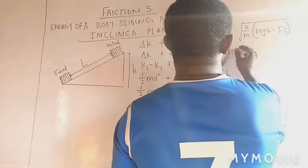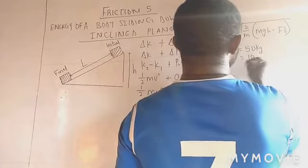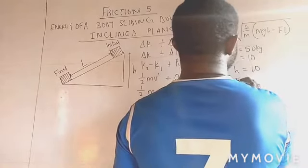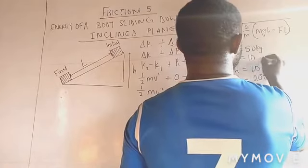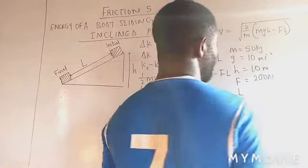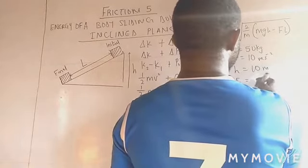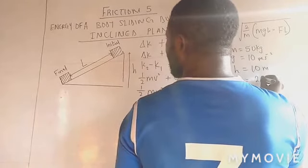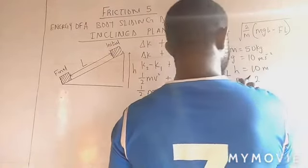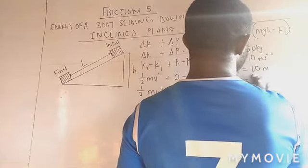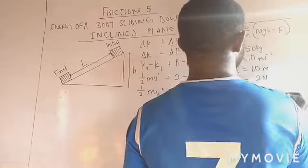Let mass be 50 kg, g to be 10 meter per second squared, h to be 10 meters. F, the frictional force, to be 2 N, and the length to be 100 meters.